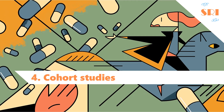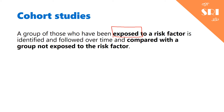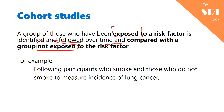The fourth type is cohort studies. To create a cohort study, a group of those exposed to a risk factor is identified and followed over time, then compared with a group not exposed to the same risk factor. For example, we follow participants who smoke and those who do not smoke to measure the incidence of lung cancer. Unlike case-control studies where people are already diseased, in a cohort study none of them have the disease yet — some are smoking, some are not — and we follow them over time to see who develops the disease.